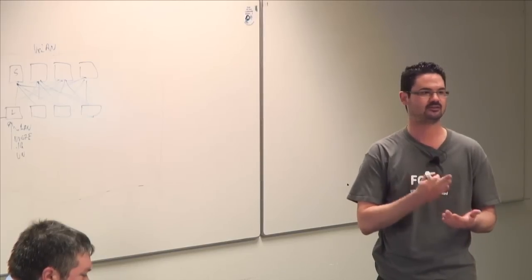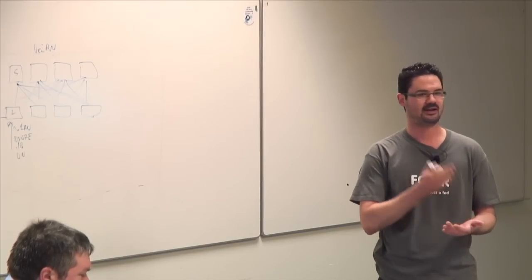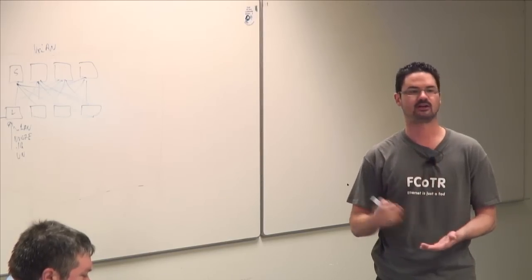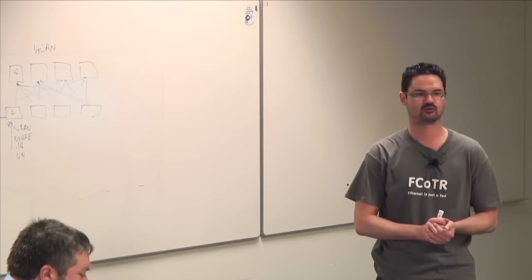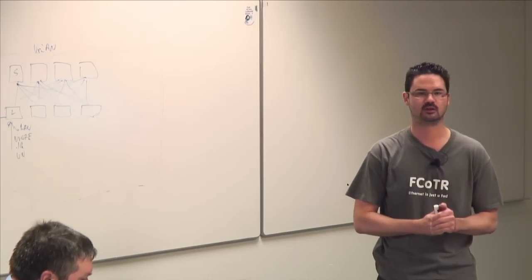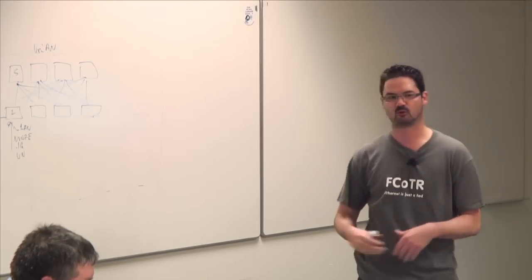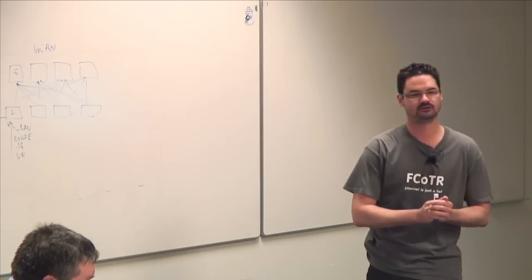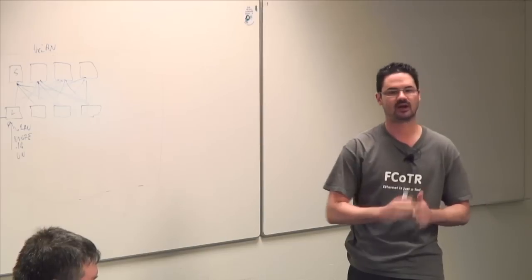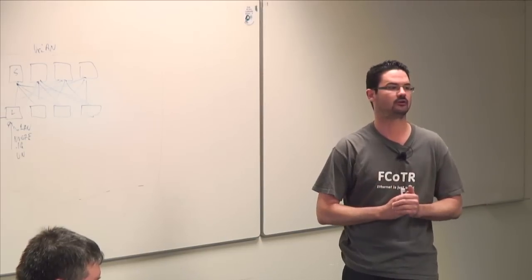If my leaf does not know where a packet goes, at line rate, unicast, it learns it by sending it through the spine proxy. There are a lot of things we do in hardware that enable how ACI works and becomes transparent underneath.